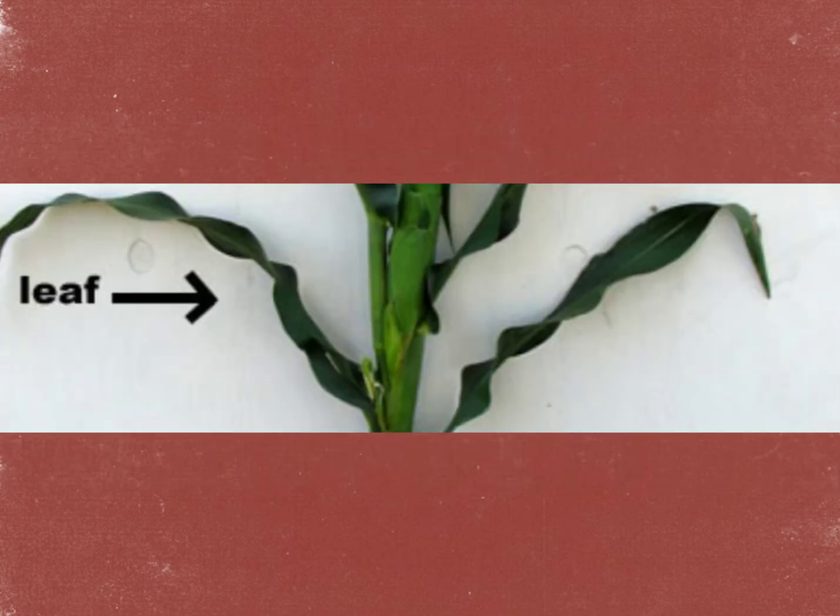A full-grown corn plant has 16 to 19 leaves, although five leaves fall off by the time the plant tassels. The leaf provides the surface area where light is intercepted and photosynthesis takes place.